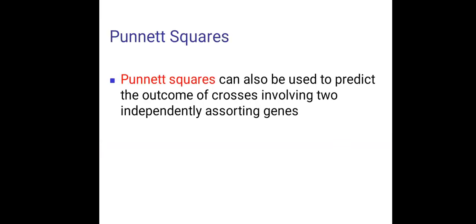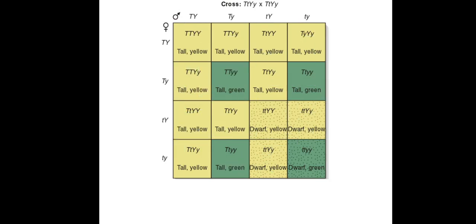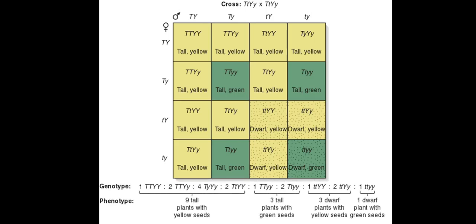Punnett squares can also be used to predict the outcome of crosses involving two independently assorting genes. Here is the example explaining. The traits that have been taken in this dihybrid cross is tall plants with yellow seeds and dwarf plants with green seeds. The ratio comes out to be again 9:3:3:1.